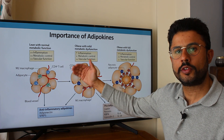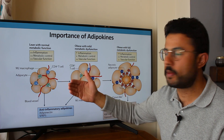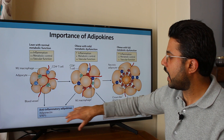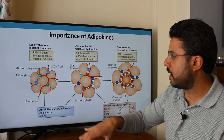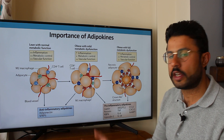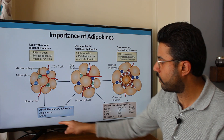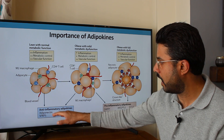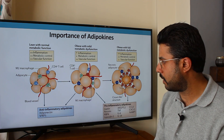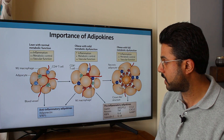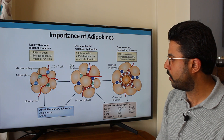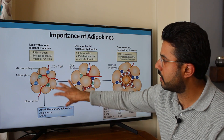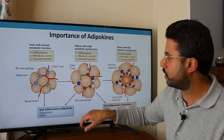If you have a lean person with a healthy weight — a normal body mass index — their metabolic function is normal as well. Their adipocytes are actually releasing anti-inflammatory adipokines, so they're in a good situation. We've talked about the importance of adiponectin, particularly in terms of glucose and lipid metabolism in the body, and these anti-inflammatory adipokines are released by normal adipocytes in a lean person.